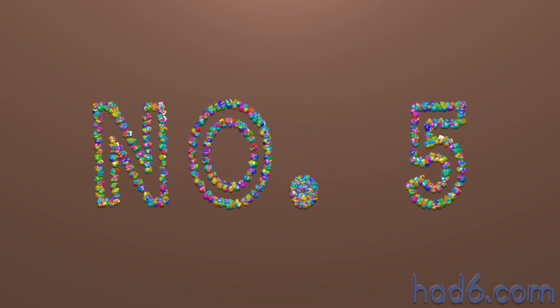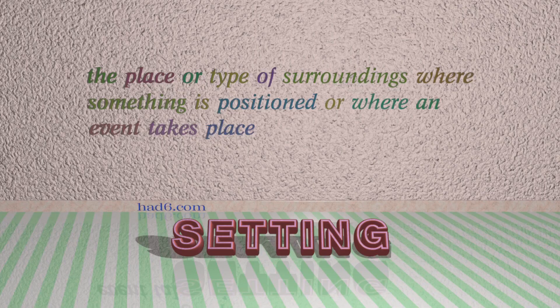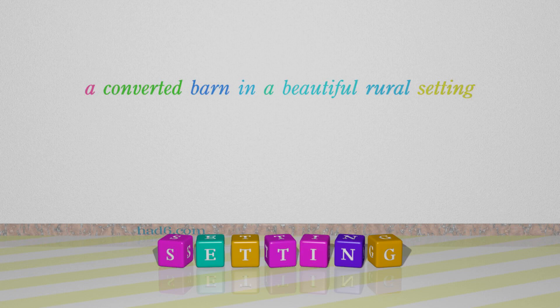Number 5: Setting. Which means the place or type of surroundings where something is positioned or where an event takes place. For example: A converted barn in a beautiful rural setting.